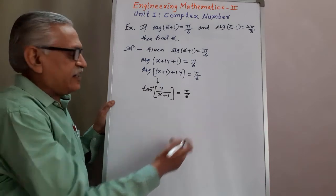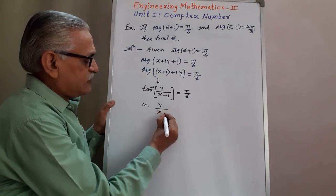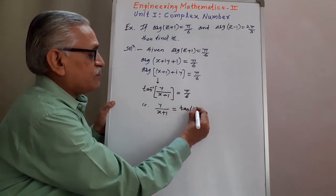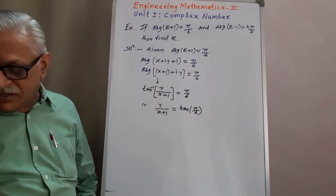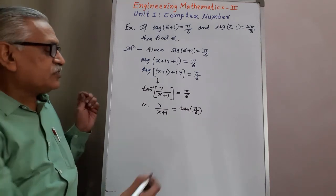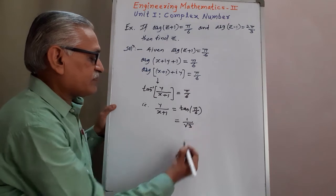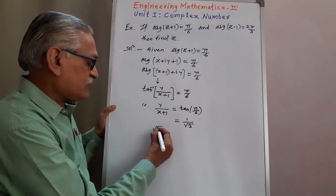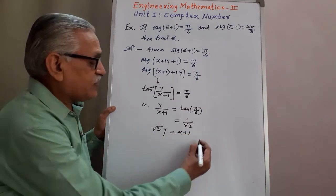Transferring the tan inverse to the right hand side, we get y upon x plus one equals tan of pi by six. The value of tan(π/6) is 1 by root 3. Therefore, y equals x plus one divided by root 3. We call this Equation 1.